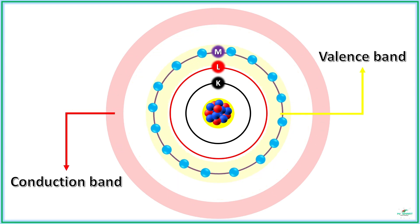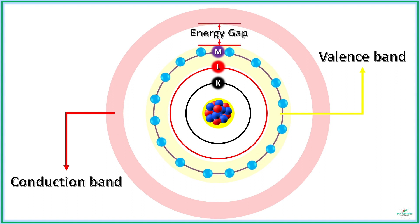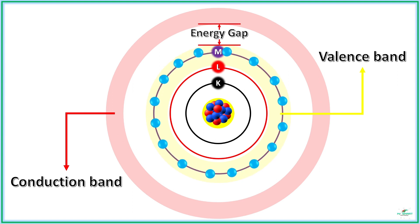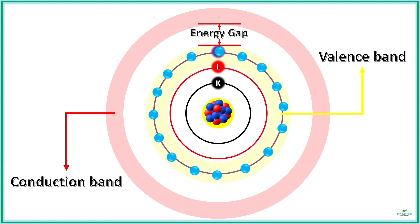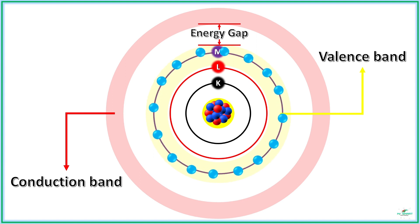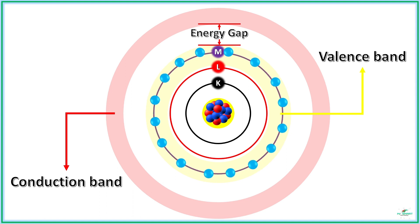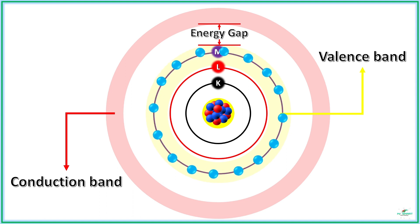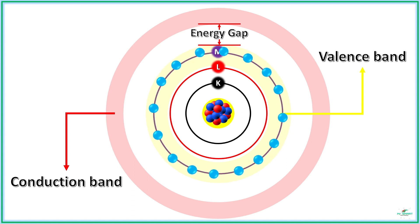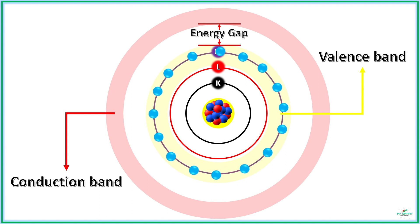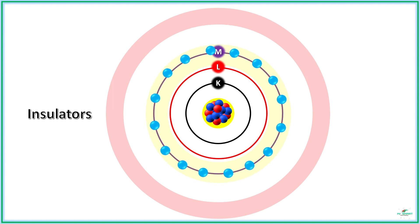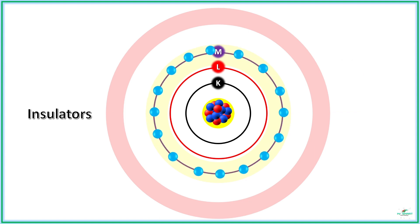In some materials, the valence band and conduction band are far away, and the energy gap separating them is very high. In these types of materials, the valence electron will never excite to the conduction band even when a high external force is given. So these types of materials have no free electrons to conduct electricity, and these materials are called insulators.